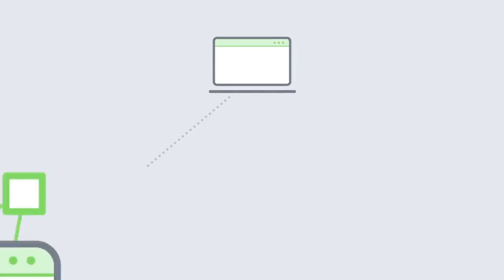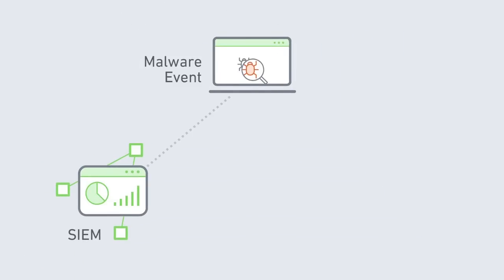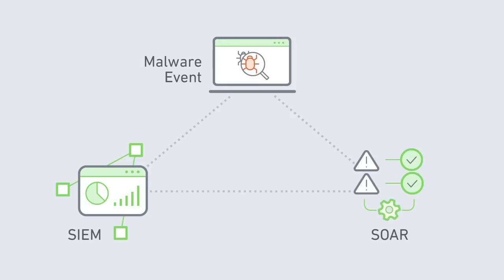Let me give you an example. Let's say there is malware found on a laptop. An analyst would normally go to the endpoint security system, quarantine the computer, then maybe search for the source of the malware in an IDS or an IPS to make sure no one else is affected. With SOAR, the analyst can automate the quarantine action from the SIEM — they don't need to log into the endpoint security system.